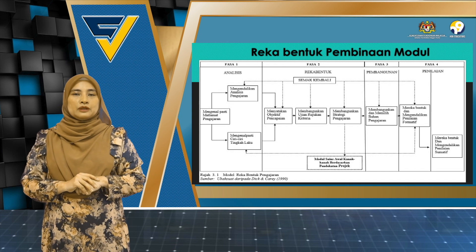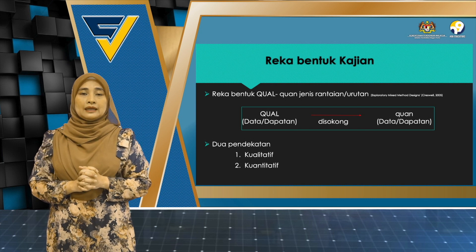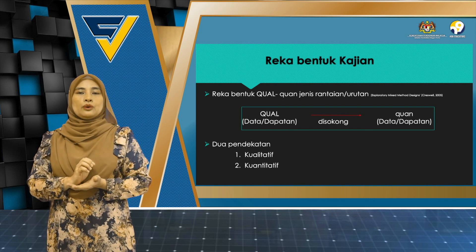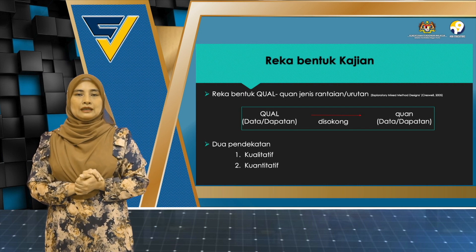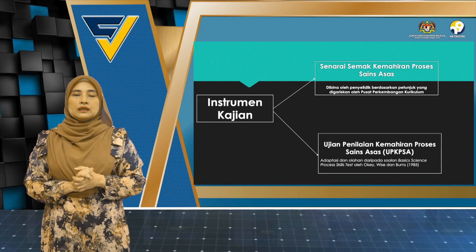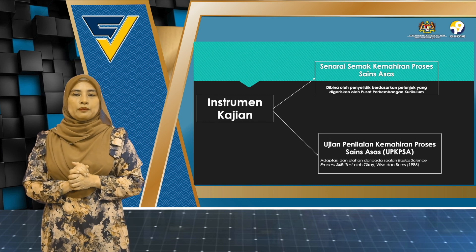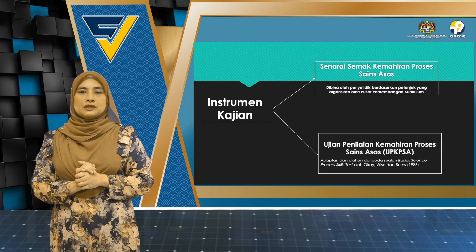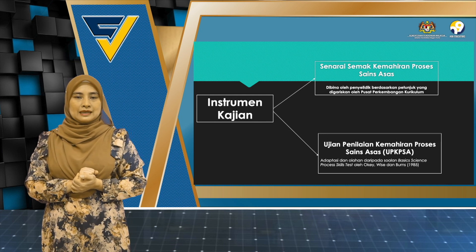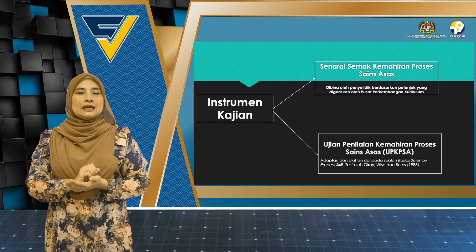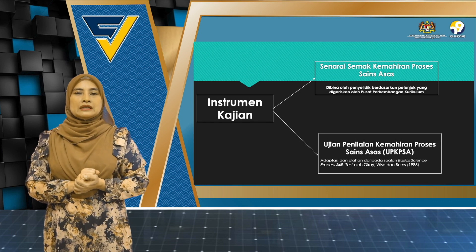Seterusnya tuan-puan, ini ialah rekabentuk kajian. Kajian ini menggunakan rekabentuk kuantitatif-kualitatif jenis rantaian atau urutan di mana data kualitatif disokong oleh data kuantitatif, menggunakan dua pendekatan iaitu kualitatif dan juga kuantitatif. Kajian ini menggunakan dua instrumen. Yang pertama, senarai semak kemahiran proses sains asas, dibina oleh penyelidik berdasarkan petunjuk yang digariskan oleh Pusat Perkembangan Kurikulum. Yang kedua, ujian penilaian kemahiran proses sains asas, diadaptasi daripada soalan Basic Science Process Skills oleh Weiss dan Bern 1985.